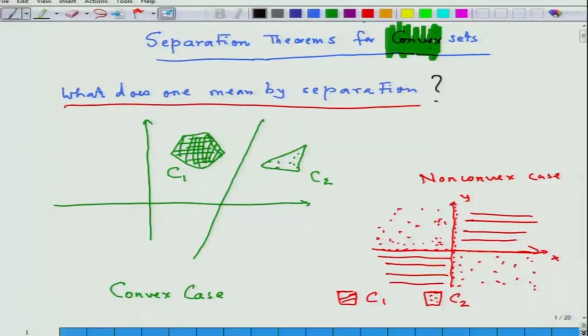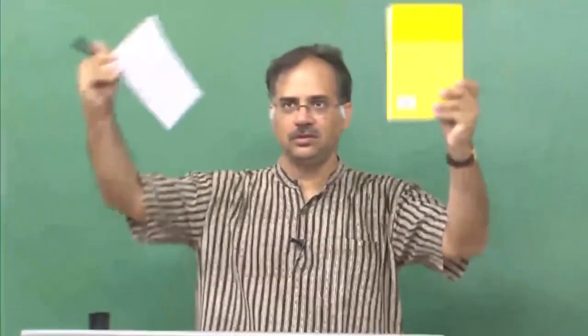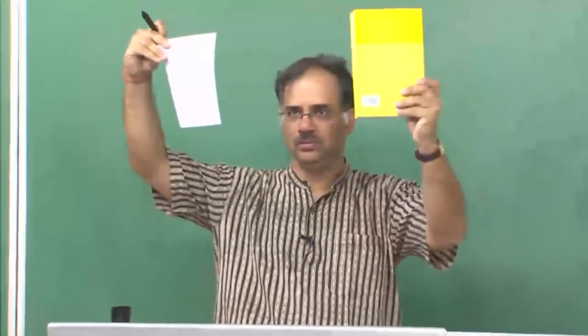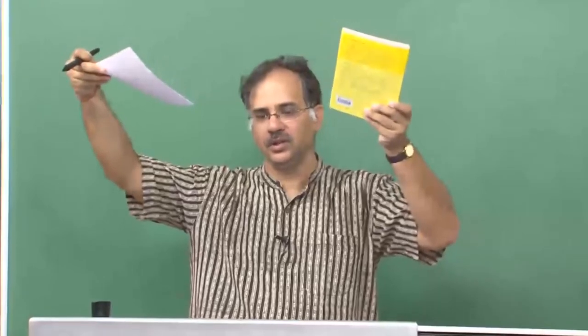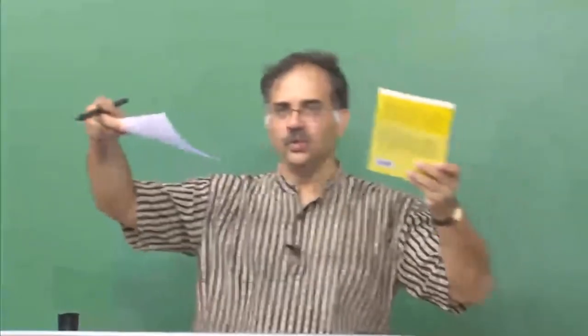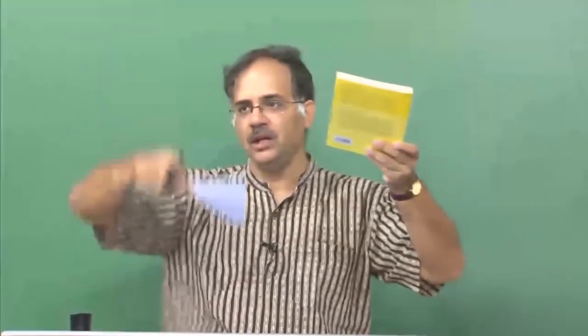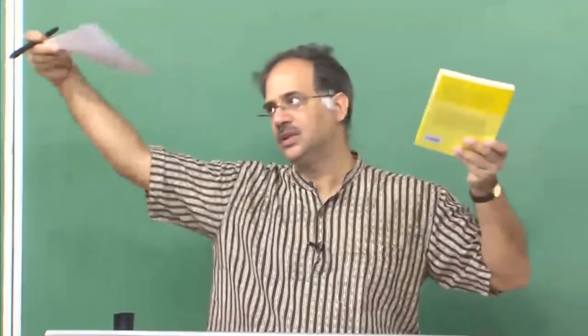What one means is the following: if you take two convex sets which are disjoint from each other — say this one and this one — they are convex sets but disjoint from each other in R³. Then in R³ you can pass a plane which separates these two; you basically put a border or a wall between them, so one set lies on one side of the wall and the other set lies on the other side.